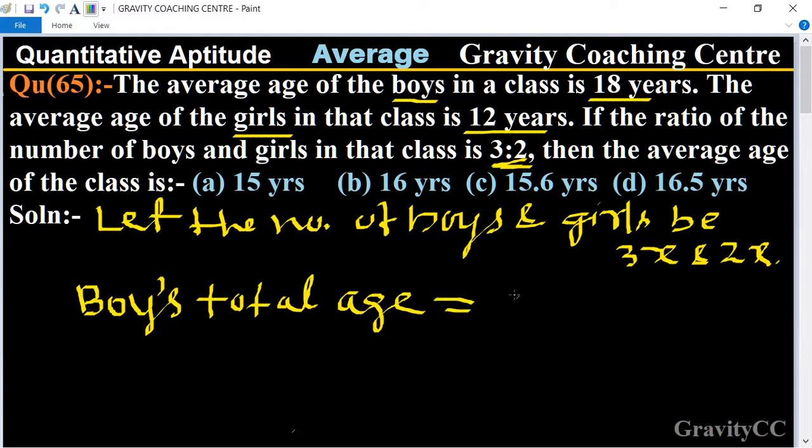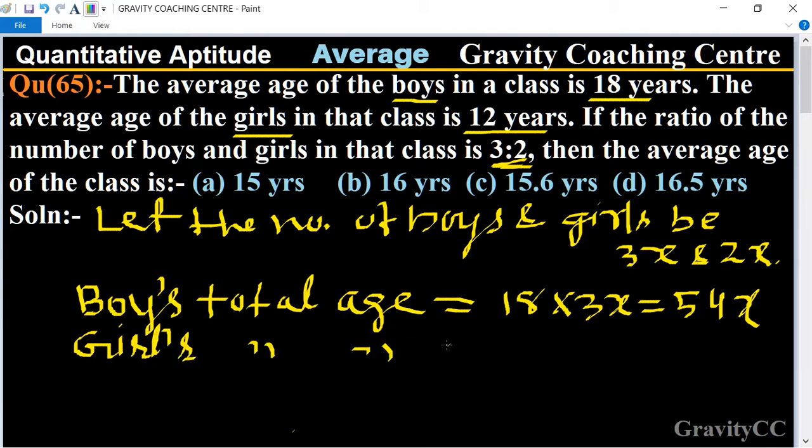And girls' total age equal to its average, 12 into the number of girls 2x, equal to 24x.